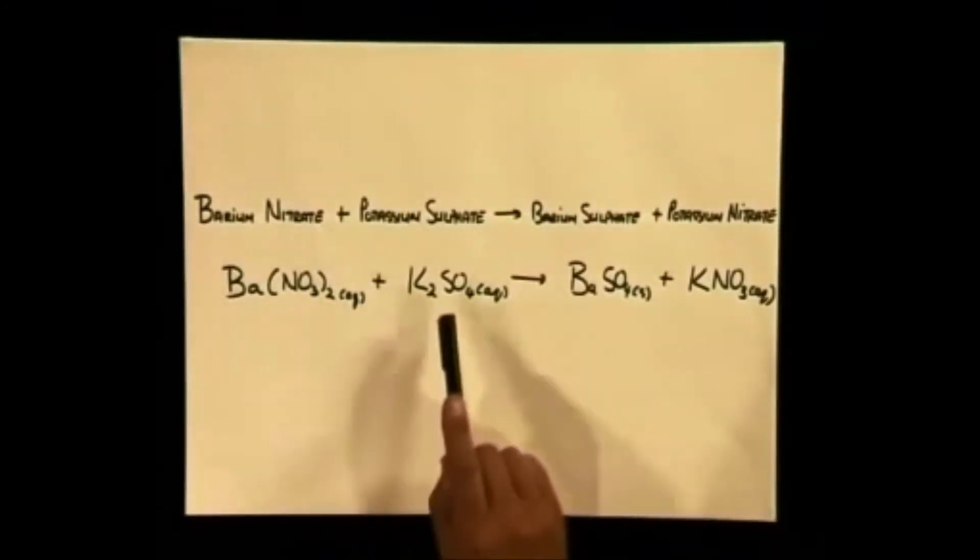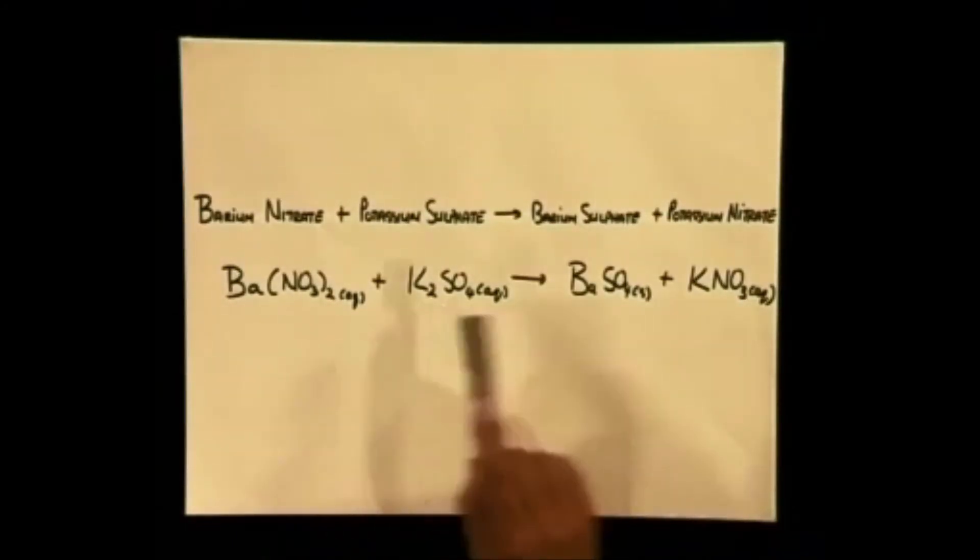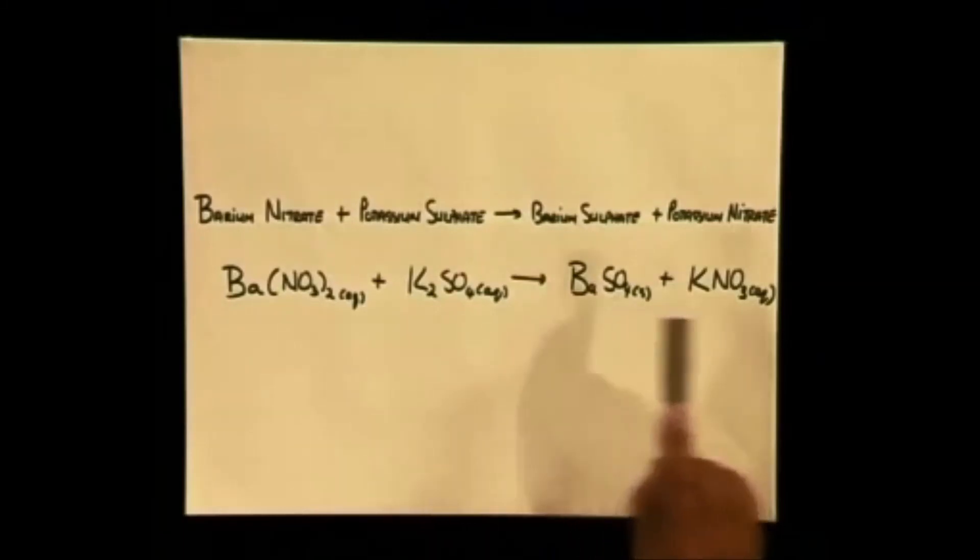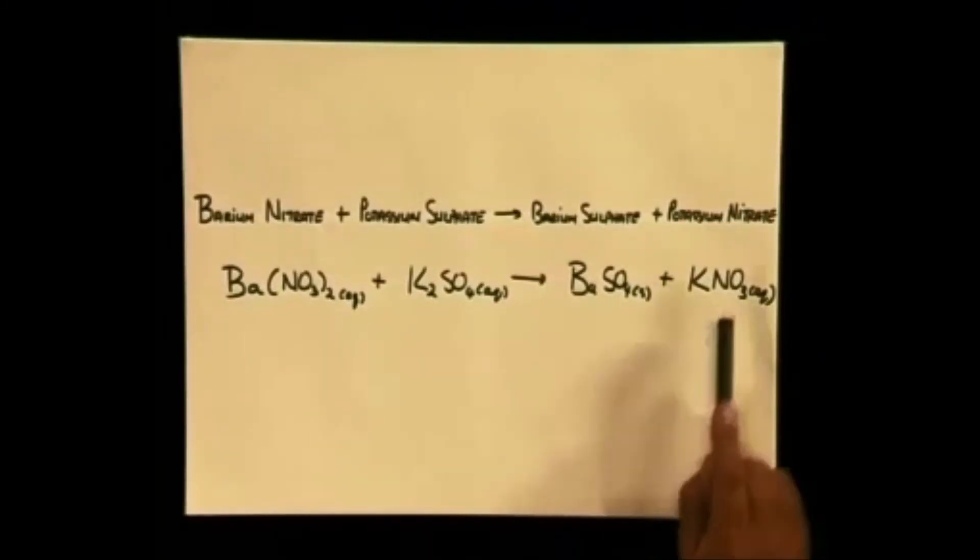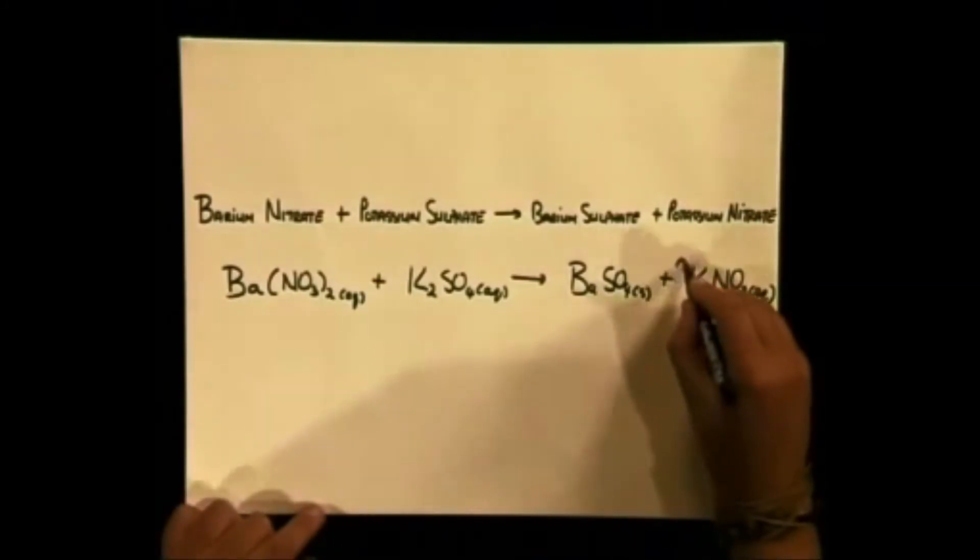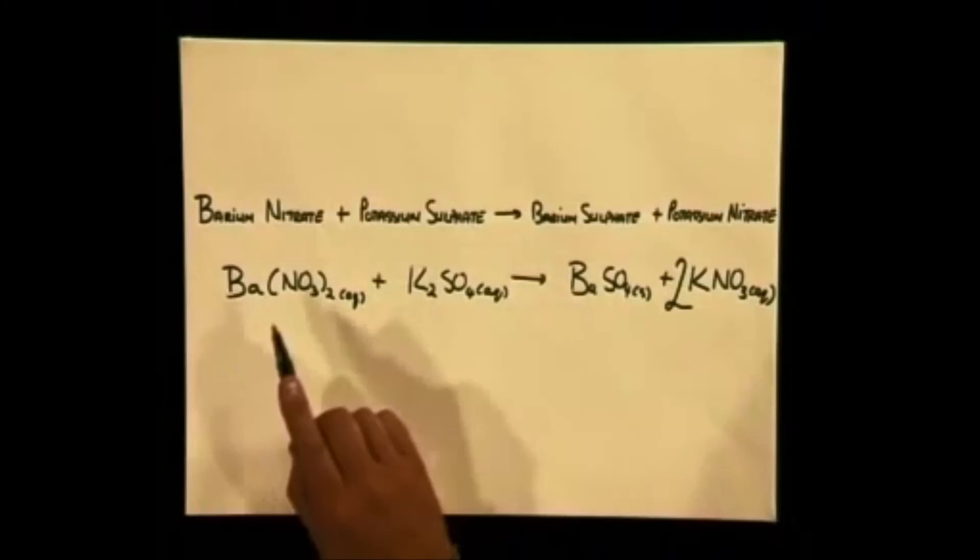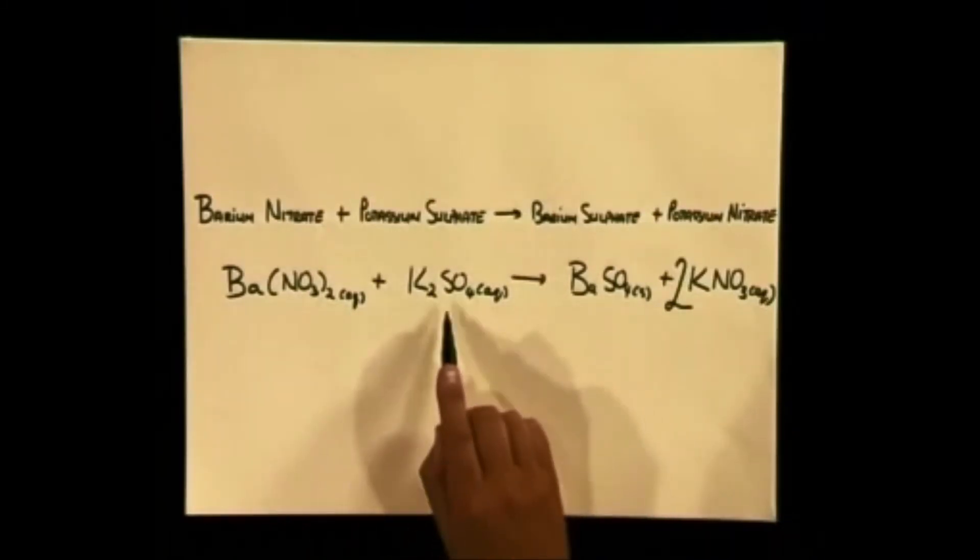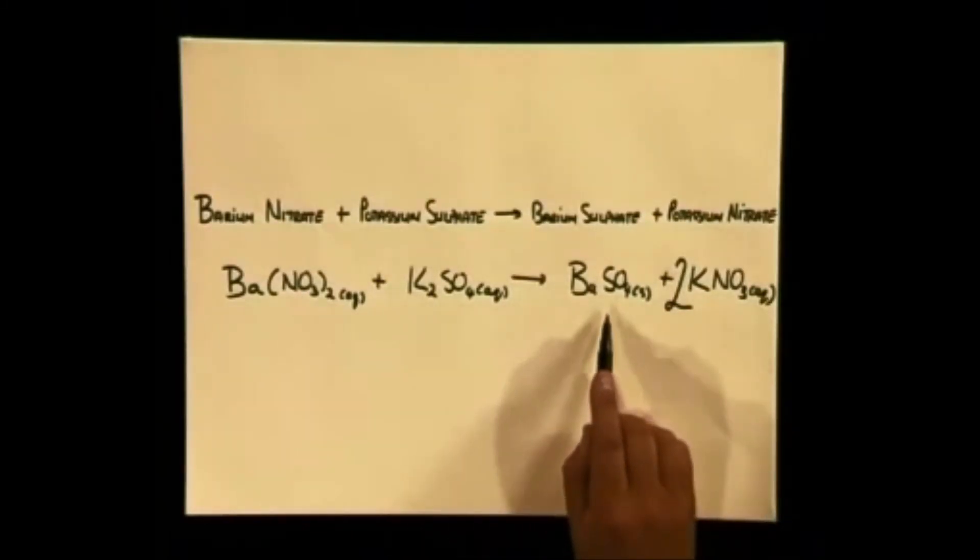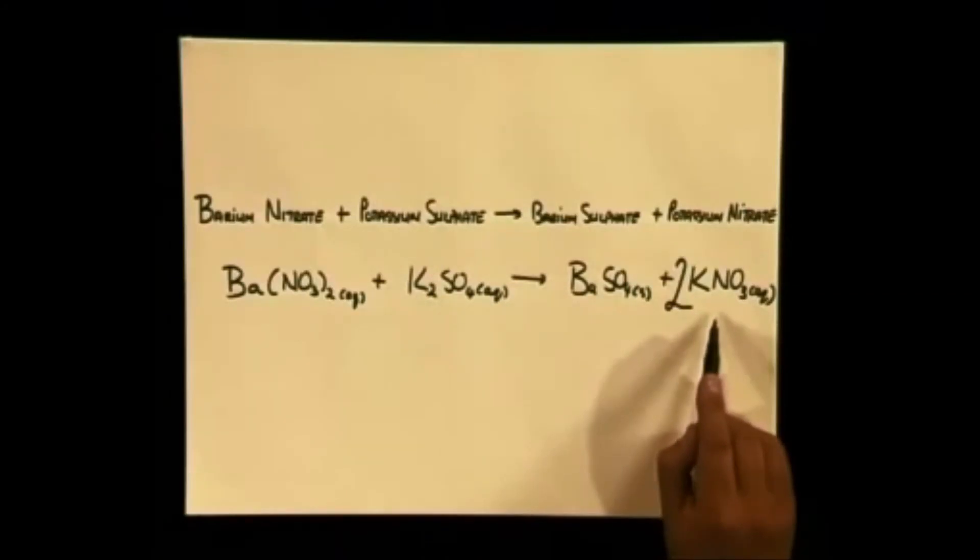Ba(NO3)2 + K2SO4 gives you BaSO4 + KNO3. Now to balance this, we need to add a two in front of the potassium nitrate. So it now reads: Ba(NO3)2 + K2SO4 → BaSO4 + 2KNO3.